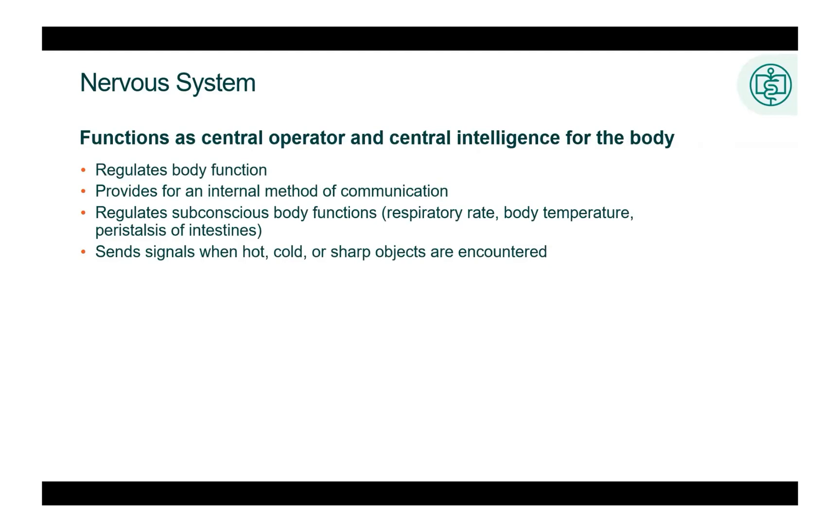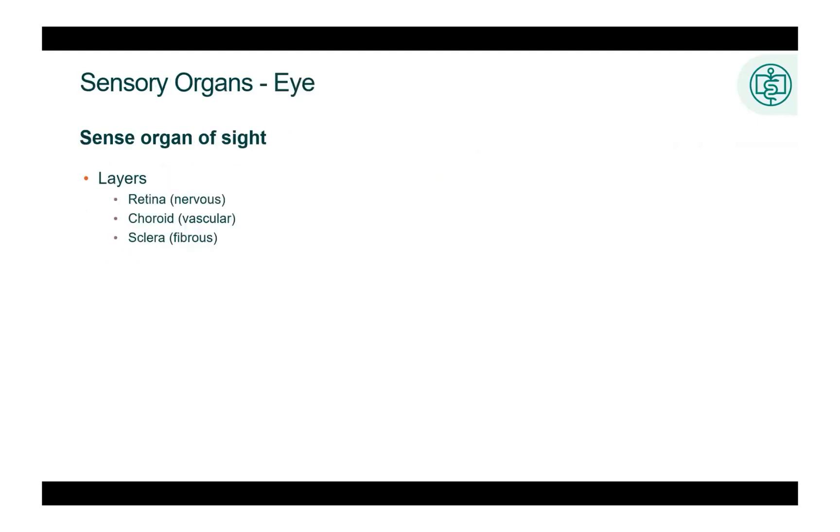The nervous system functions as a central operator, as the central intelligence for the body. It detects changes outside and within the body, makes decisions based on the information received, and stimulates muscles or glands to respond.